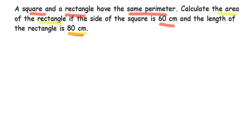So first we're going to use the relationship that the square and rectangle have the same perimeter. Using this, we're going to find the breadth, and using that we're going to find the area of the rectangle. So, the perimeter of the square is the same as the perimeter of the rectangle.